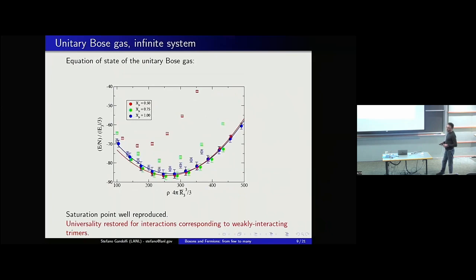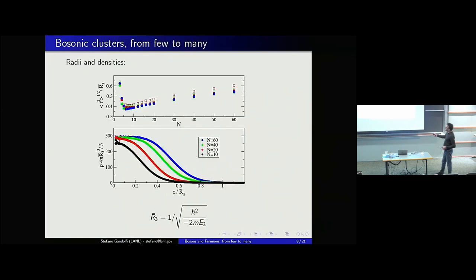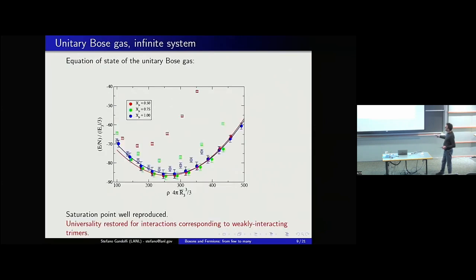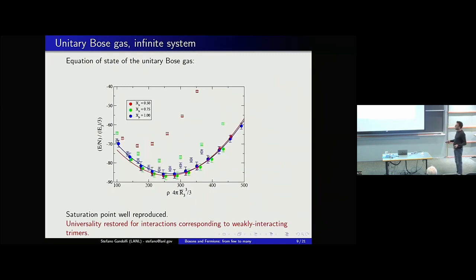We then went to the infinite system — a simulation of bosons in a periodic box. The energy per particle, again referenced to the trimer energy as a function of density, shows that closed symbols give a consistent equation of state within statistical uncertainties. The saturation point is very similar to where the cluster density saturates, presenting a minimum consistent with a system that eventually saturates. The open symbols, corresponding to trimers that are more bound, show non-universality even more clearly than in the cluster energy.